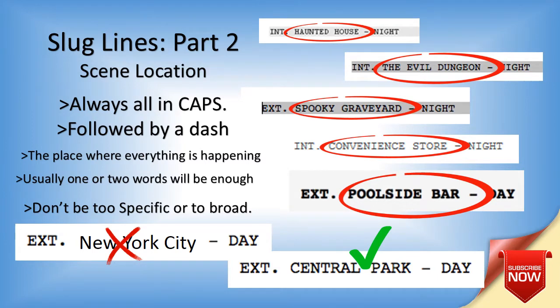Part two of a slug line is scene location, always in caps followed by a dash. It's the place where everything is happening. Usually one or two words will be enough — please don't overdo it. Don't be too specific but don't be too broad either. That's where the creativity comes in — you've got to figure out the best way to convey to the reader what the location is without saying too much but without saying too little.